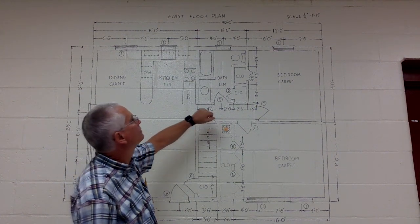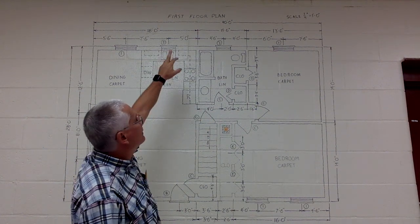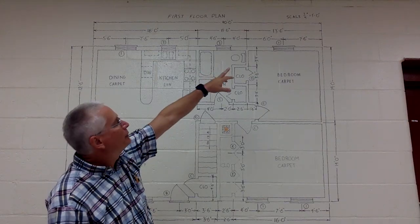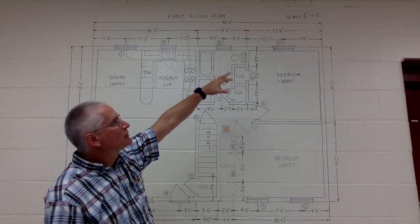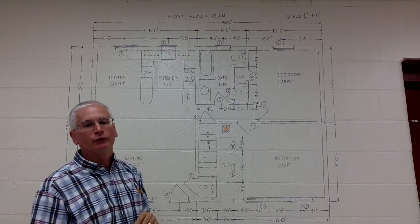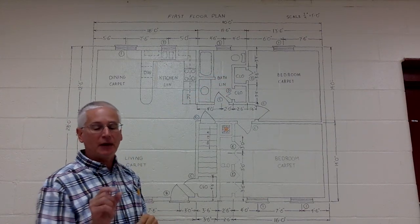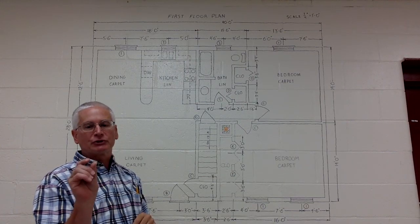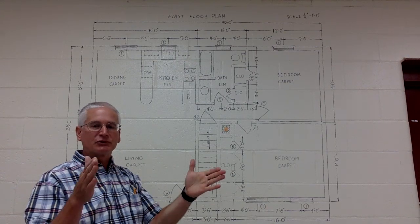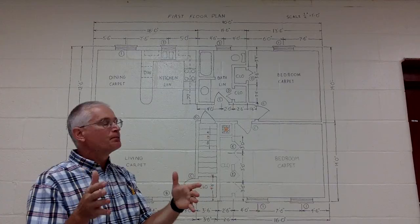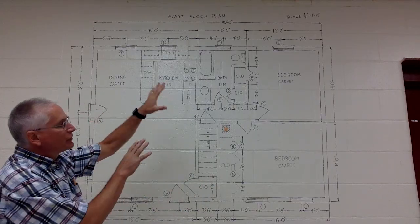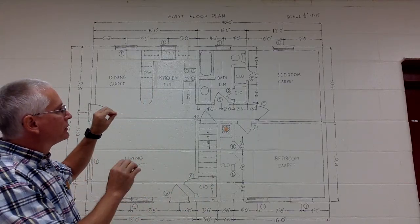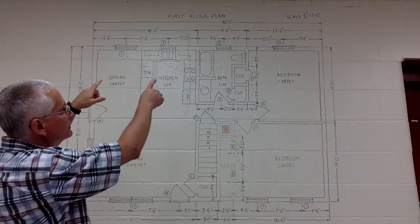The name of the drawing up on the top: First Floor Plan. Up in the top right, the scale — quarter inch equals one foot. Basically that means on the paper, every quarter inch that you measure represents one foot of the actual house. Everything drawn in architecture will be done to scale.